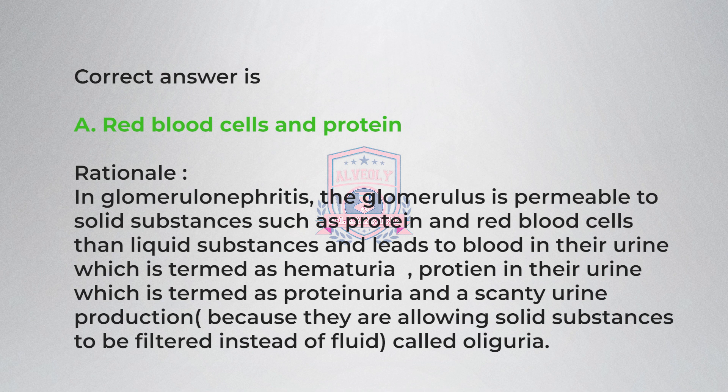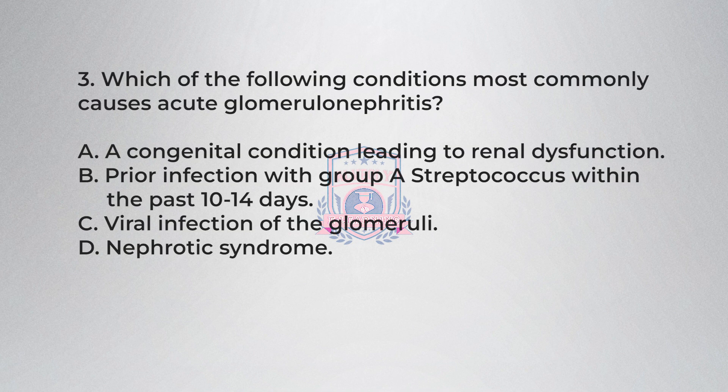This also leads to scanty urine production, because solid substances are being filtered instead of fluid, a condition called oliguria. Question 3: Which of the following conditions most commonly causes acute glomerulonephritis? A) A congenital condition leading to renal dysfunction, B) Prior infection with group A streptococcus within the past 10 to 14 days.